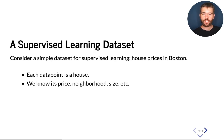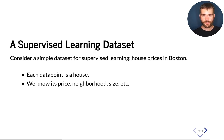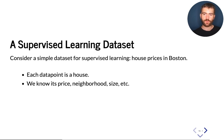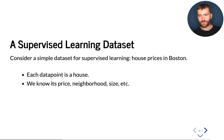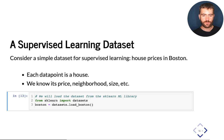Each data point in this dataset is a house, and we know different attributes about this house: we know its price, its neighborhood, its size, the zip code, how many rooms it has — we have a lot of additional information.